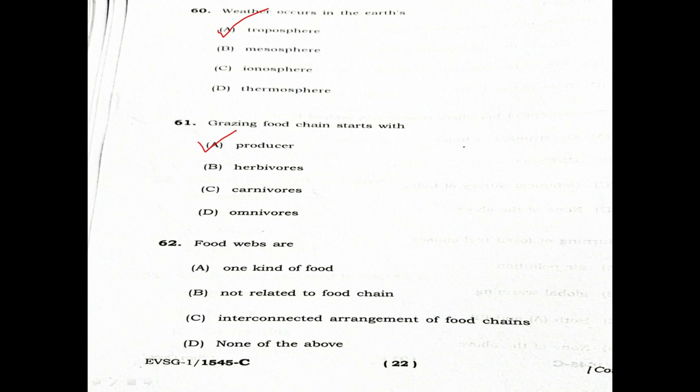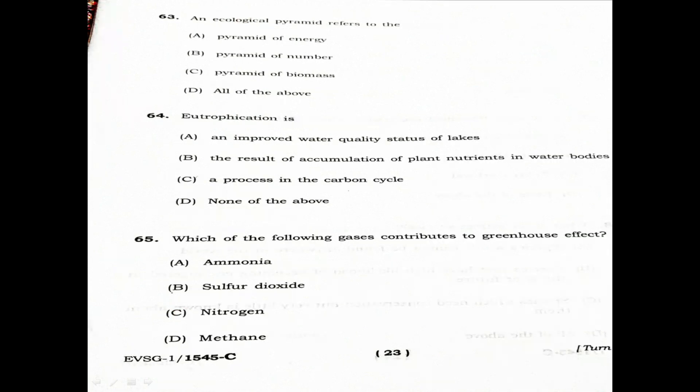Question 63: An ecological pyramid refers to the food chain. Option A: Pyramid of energy. Option B: Pyramid of number. Option C: Pyramid of biomass. Option D: All of the above. An ecological pyramid includes pyramid of energy, pyramid of number, and pyramid of biomass. Therefore, the correct answer is D, all of the above.